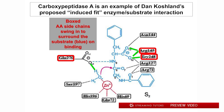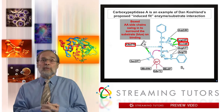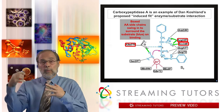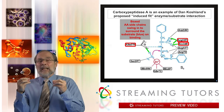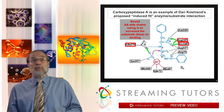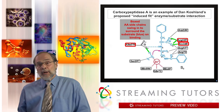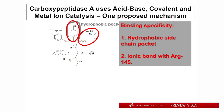These bonds precisely position the substrate, and again, an analogy we've used before: it's a little like the assembly of an automobile on a robotic assembly line — everything has to be just exactly right, but if it is, boom, everything goes really fast. That's one of the ways in which enzyme catalysis works. So let's now look at the steps in catalysis by carboxypeptidase A.